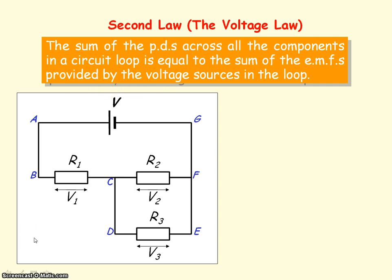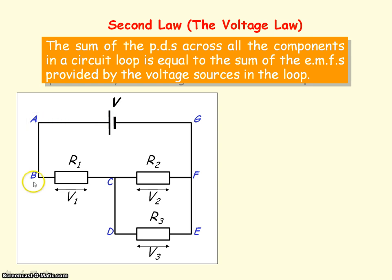So if we apply Kirchhoff's second law to this circuit, we have three loops. We have loop A-B-C-F-G, we also have loop A-B-C-D-E-F-G, and the third loop is loop C-D-E-F.